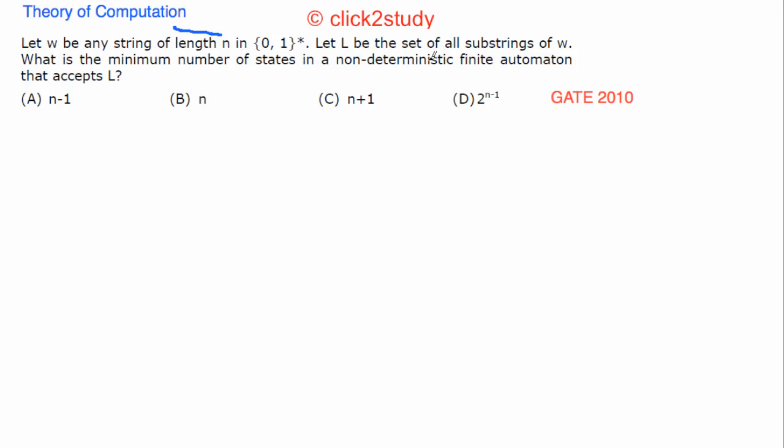And then L is the set of substrings of w. So basically you have to have an NFA that will accept the substrings of this w. Okay, so let's try to do what we can do.